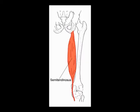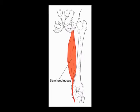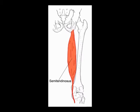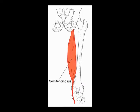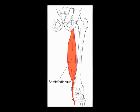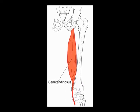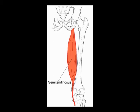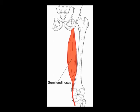The concentric actions of the semitendinosus muscle are hip extension, knee flexion, medial rotation of the tibia when the knee is flexed, and medial rotation of the thigh when the hip is extended.